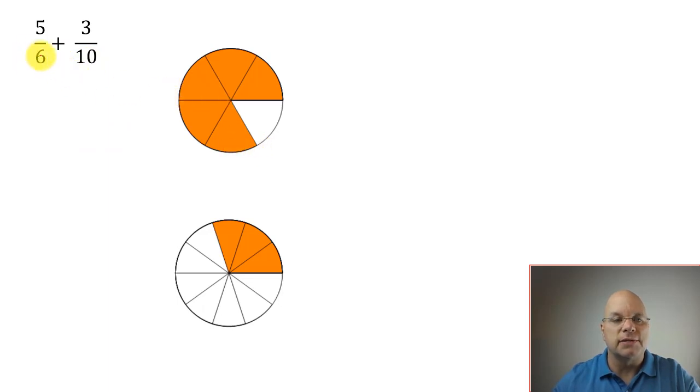You could make 6 into 12ths, but you can't make 10ths into 12ths. You can make 6ths into 18ths. Again, that won't work. 24ths, 30ths. Now 30ths will work, because we can also make 10ths into 30ths. So we're going to make both of these into 30ths.